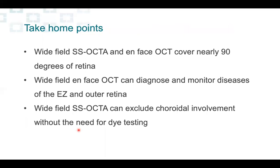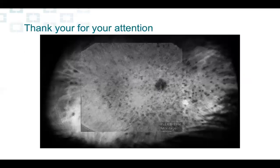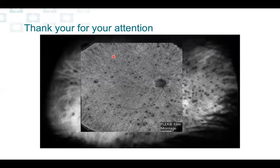The take-home point of this case is that we can go wide field — both with wide-field OCT and swept-source OCT — covering nearly 90 degrees of the retina. Wide-field OCT can detect the specific layer affected, whether it is the ellipsoid zone, the choroid, or the outer retina. Finally, swept-source OCTA is a valid alternative to ICG to exclude or confirm choroidal involvement, particularly in posterior uveitis. This composite of swept-source OCTA of the choroid covers most of what we can see with wide-field ICG. Thank you very much for your attention.